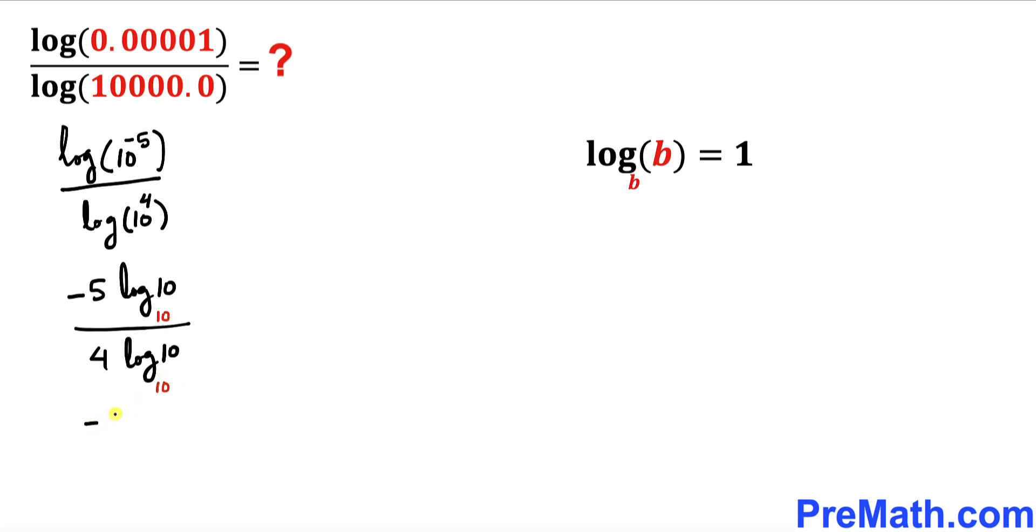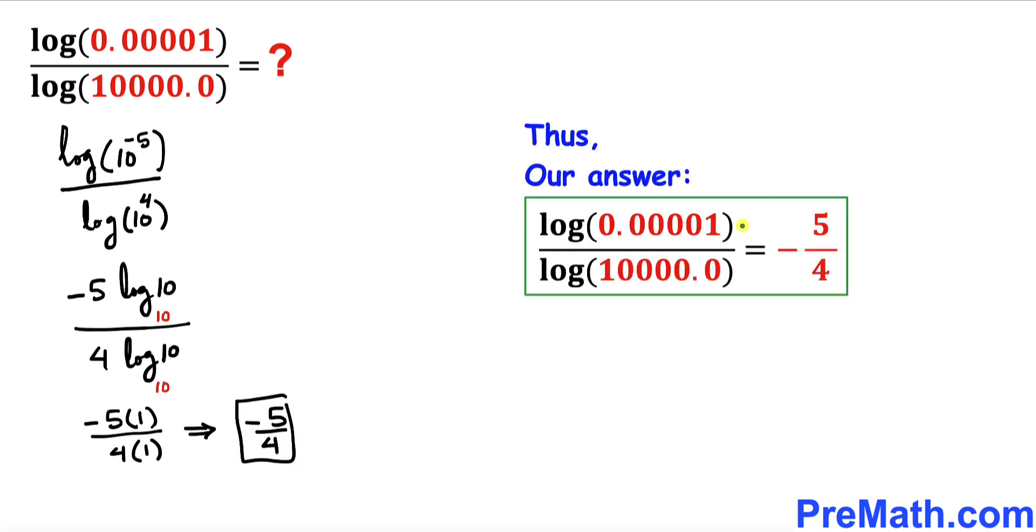Therefore, we can write negative 5 times 1 divided by 4 times 1, and that is going to be equal to negative 5 divided by 4. So that's our answer to this logarithmic expression: negative 5 divided by 4, which is the same as negative 1.25.